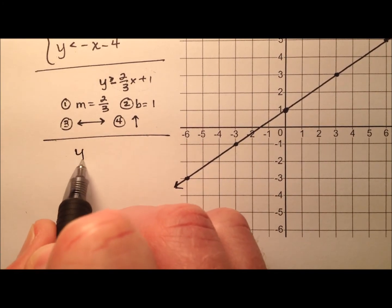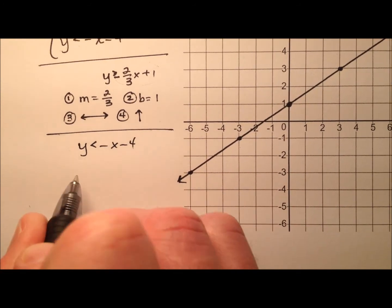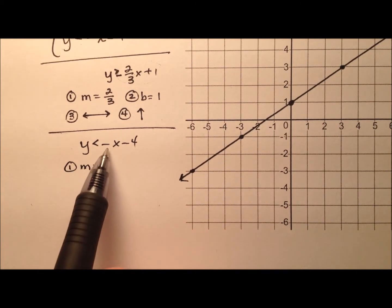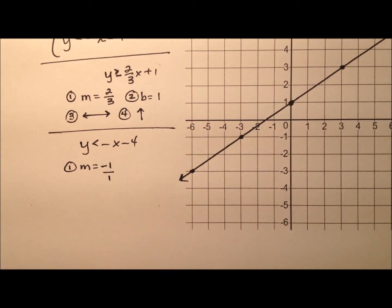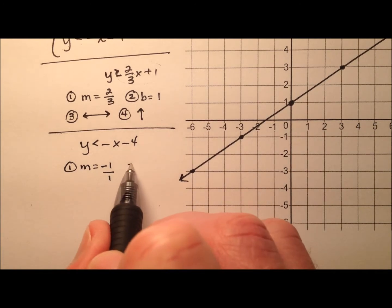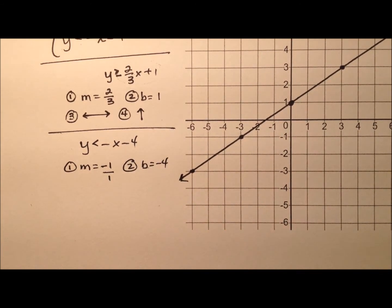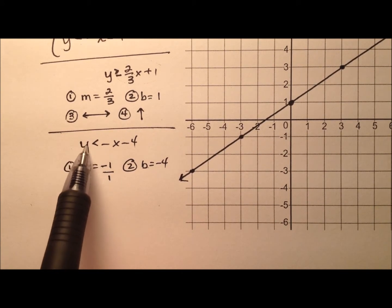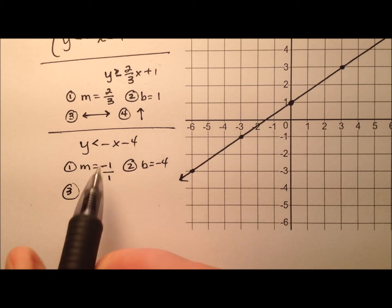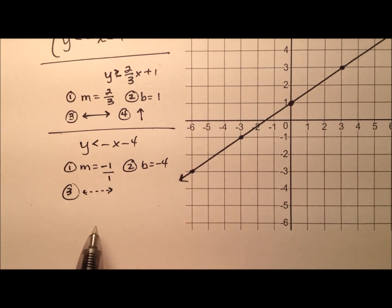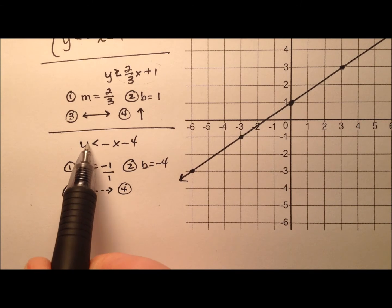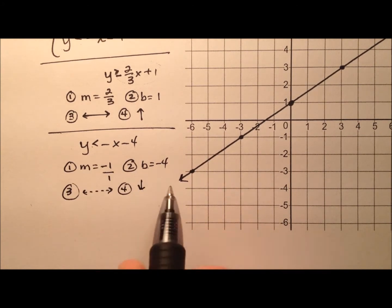The other inequality is y is less than negative x minus 4. So for these four pieces of information: the slope is negative 1, or negative 1 over 1. The y-intercept will be negative 4. This one's going to be a dashed line because y is less than, but not equal to — just less than — so that means the boundary line will not be included in the solution set. And the fourth one: are we going to shade above or below? This is y is less than, so we'll shade below.